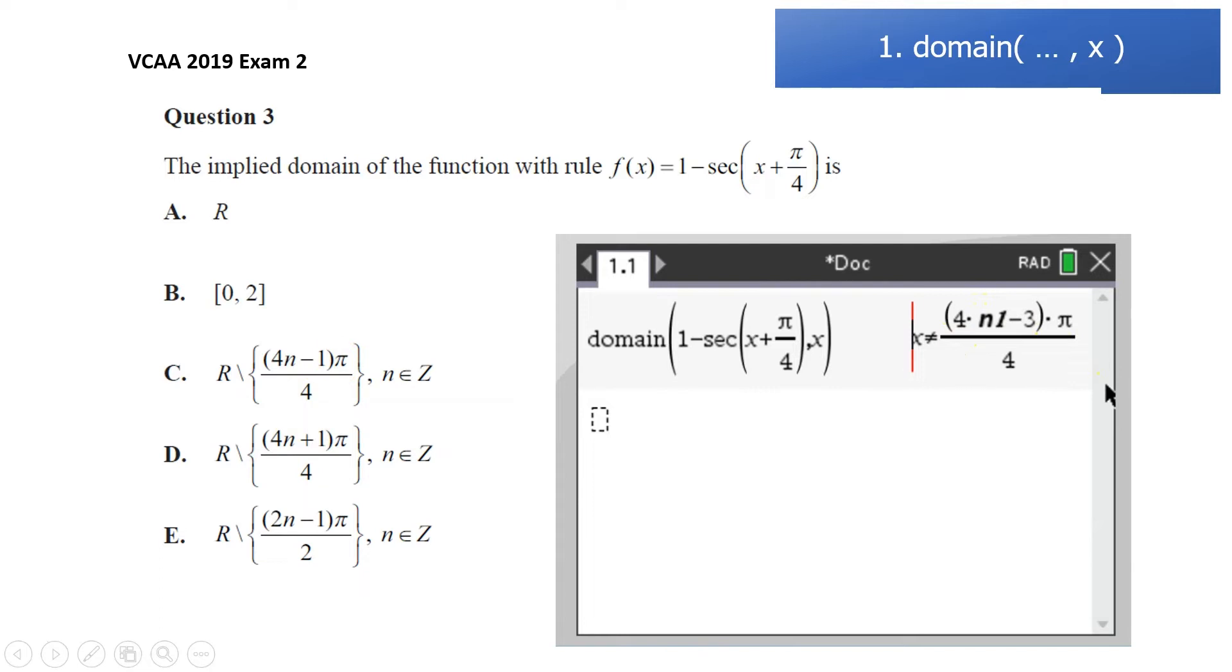But this is never going to give us negative π on 4. If we sub in n equals 0, we'll get negative 3π on 4. Sub in n equals 1, we would get 1π on 4, which is agreeing with this D option here. So it's actually equivalent to this option. We still have to do a little bit of thinking, but definitely the domain function makes things a fair bit easier.